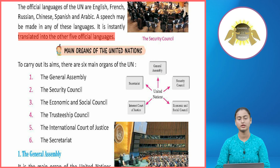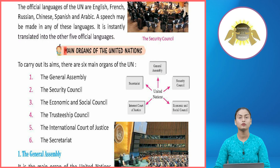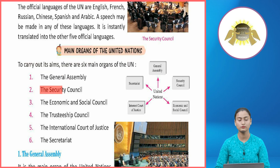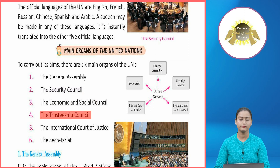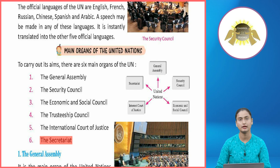Jo bhi official languages hain wo hain English, French, Russian, Chinese, Spanish aur Arabic. Kisi bhi ek language mein speech di ja sakti hai aur turant baaki ki 5 official languages mein isko translate kar diya jata hai. To carry out its aims, there are six main organs of the UN: first, the General Assembly; second, the Security Council; third, the Economic and Social Council; fourth, the Trusteeship Council; fifth, the International Court of Justice; sixth, the Secretariat.